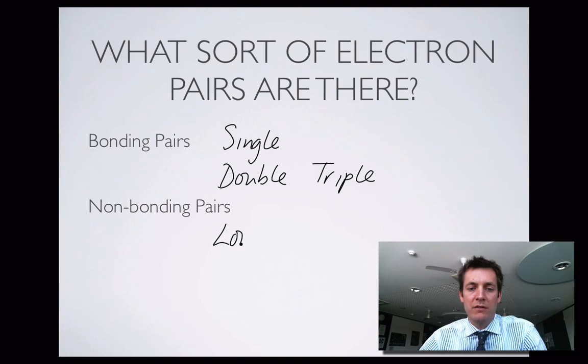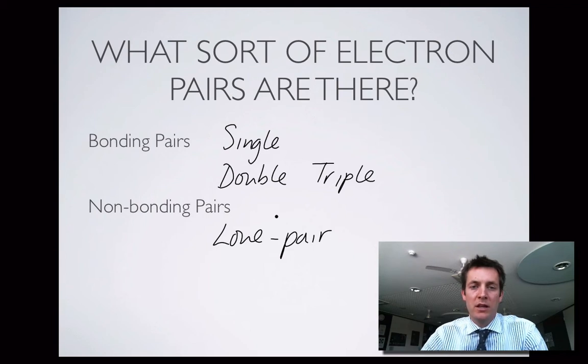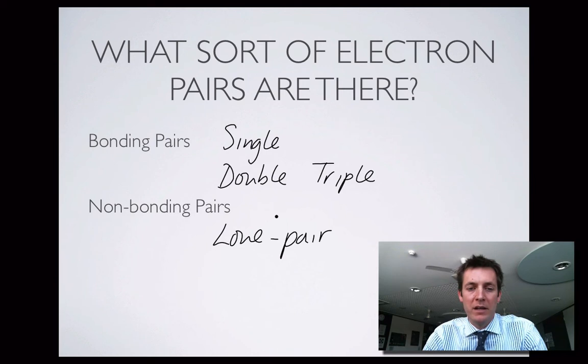And of course you can also have lone pairs, and they are what we call non-bonding. So they're pairs of electrons in the valence shell that aren't involved in making bonds. In other words, lone pairs. So they're the different kinds of electron pairs that we're going to look at repelling one another in the valence shell.